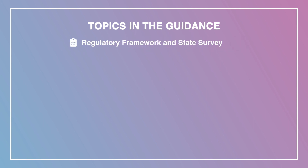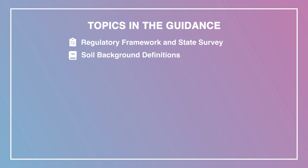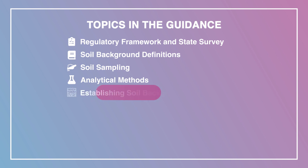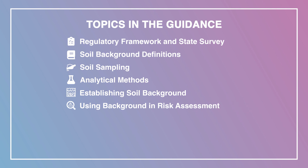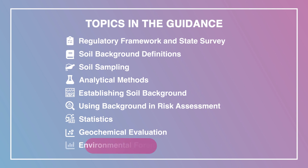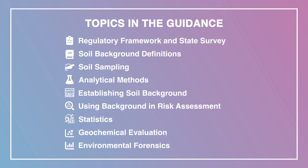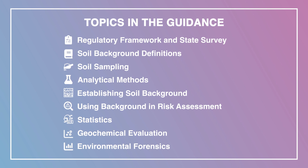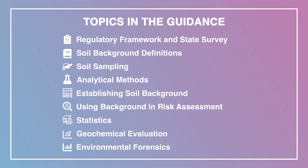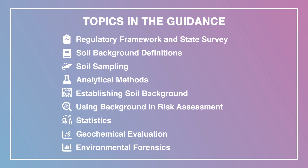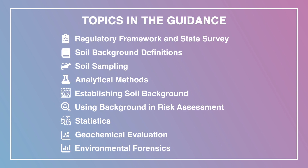The ITRC guidance document is designed to provide comprehensive guidance regarding establishing and using soil background values in risk assessment. It focuses on the process of establishing defensible background concentrations of naturally occurring chemicals, like metals, or anthropogenic substances such as PAHs, to be used for risk assessment at contaminated sites. The guidance also includes definitions and regulatory framework. This document recognizes that there is not one comprehensive and widely accepted guidance document summarizing the state of the science on this topic, and is intended to fill that gap by providing a comprehensive, defensible framework for establishing and using soil background in risk assessments.